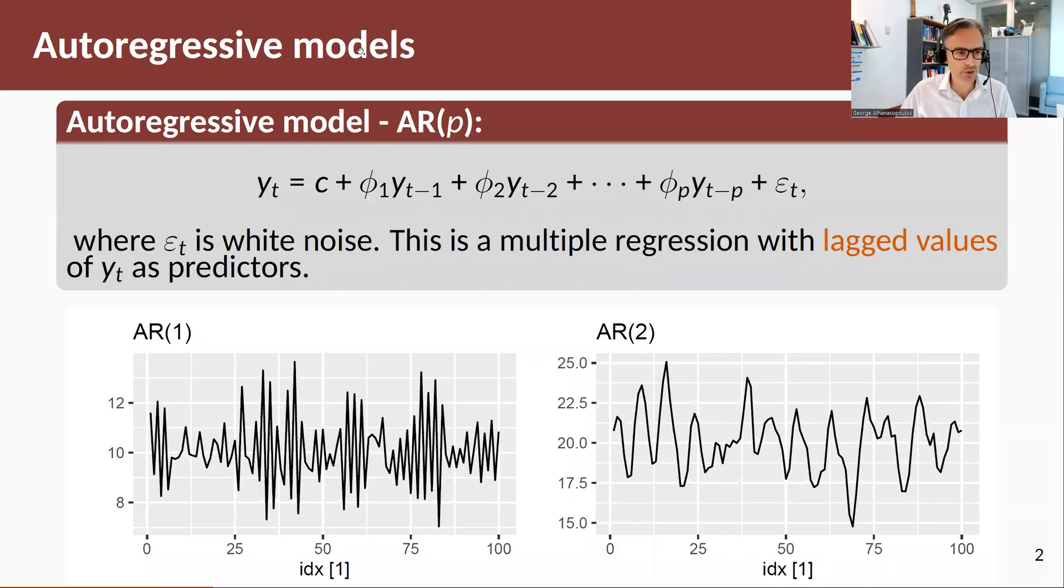What are autoregressive models? An autoregressive model of order p looks like this: y_t equals c plus phi_1 y_{t-1} plus phi_2 y_{t-2} up to phi_p y_{t-p} plus an error. This is a regression with special terms on the right hand side—the lagged values of the predictor, hence the term autoregressive, regressing on itself.